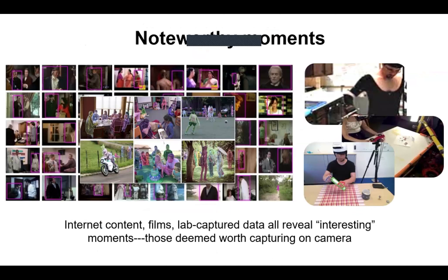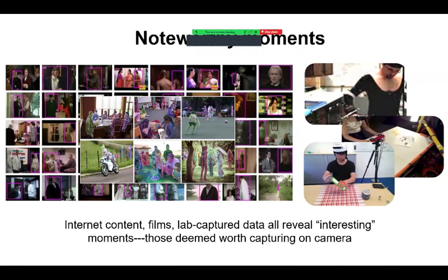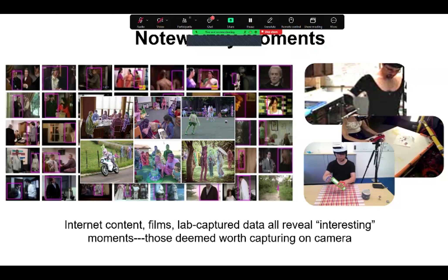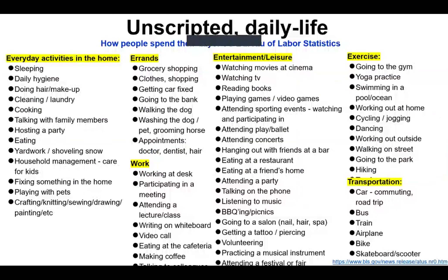There are curated moments that occupy our typical third-person internet-style datasets — let's call those noteworthy moments. They're interesting for some reason because someone decided to take that picture or video, whether that's internet content, a film, or lab-captured data. What we're going to explore in our first data resource, Ego4D, is going from the noteworthy to the un-noteworthy, capturing ongoing and unscripted activity — the things that just happen in daily life.